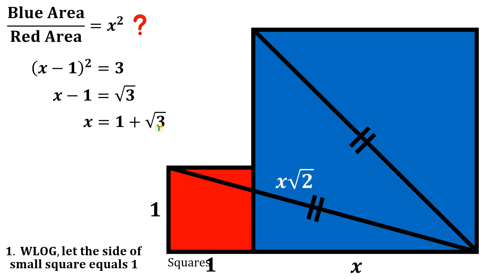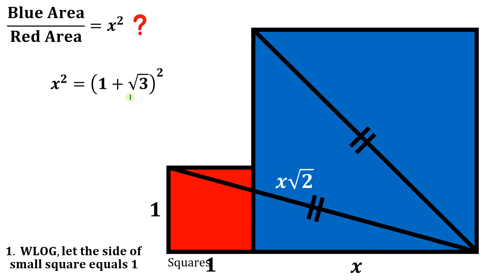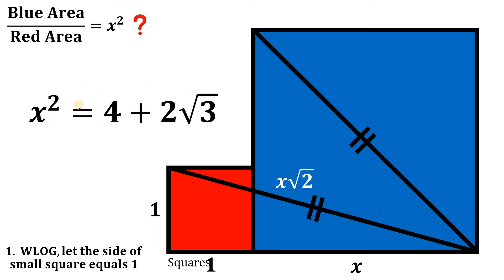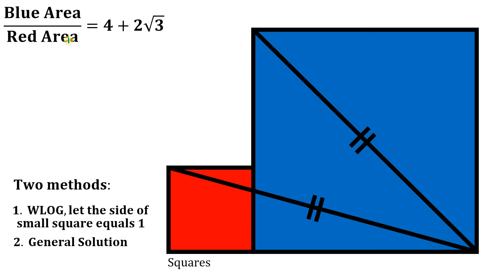Since we want x squared, we square both sides: x squared equals (one plus square root of three) squared. Expanding using the square of a binomial: one plus three plus two times square root of three, which equals four plus two times square root of three. This is the value of x squared and therefore the ratio of the blue area to the red area. Using the first method, the ratio equals four plus two times square root of three.